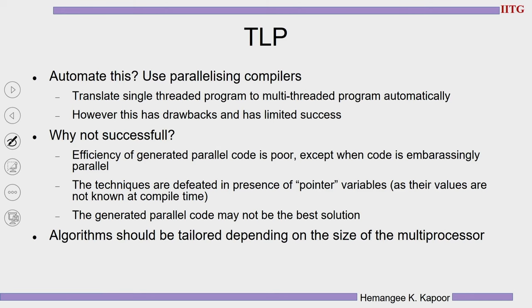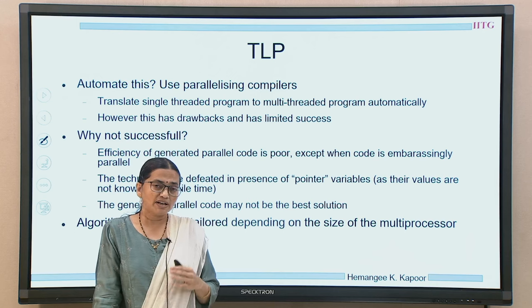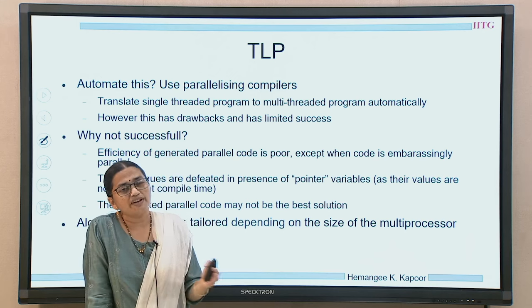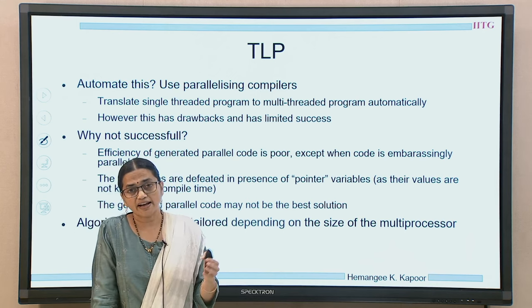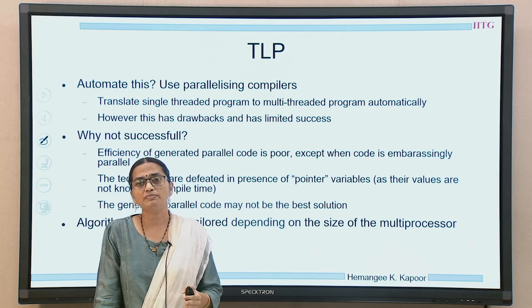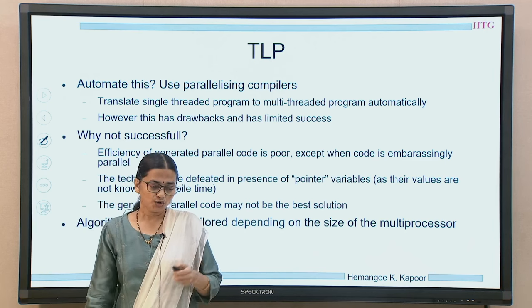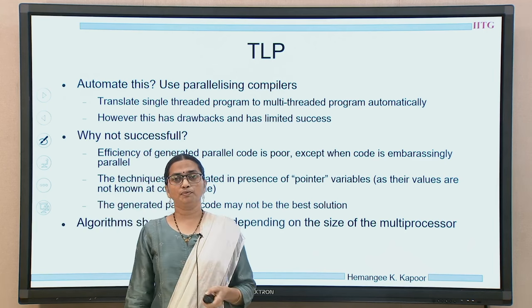Algorithms written under TLP should be tailored to the size of the multiprocessor. If you have four cores, four threads is best. If you have 1000 cores, you would make more threads. If you only have two cores, there is no point in making four or ten threads. So depending on the size of the multiprocessor, the algorithm should be tailored accordingly for the best TLP output.